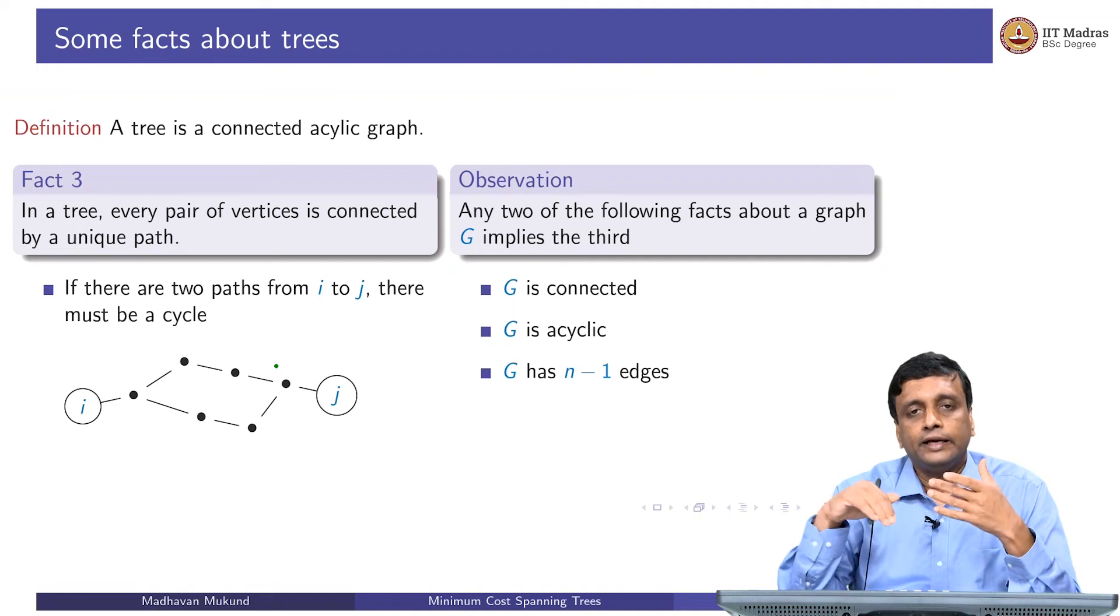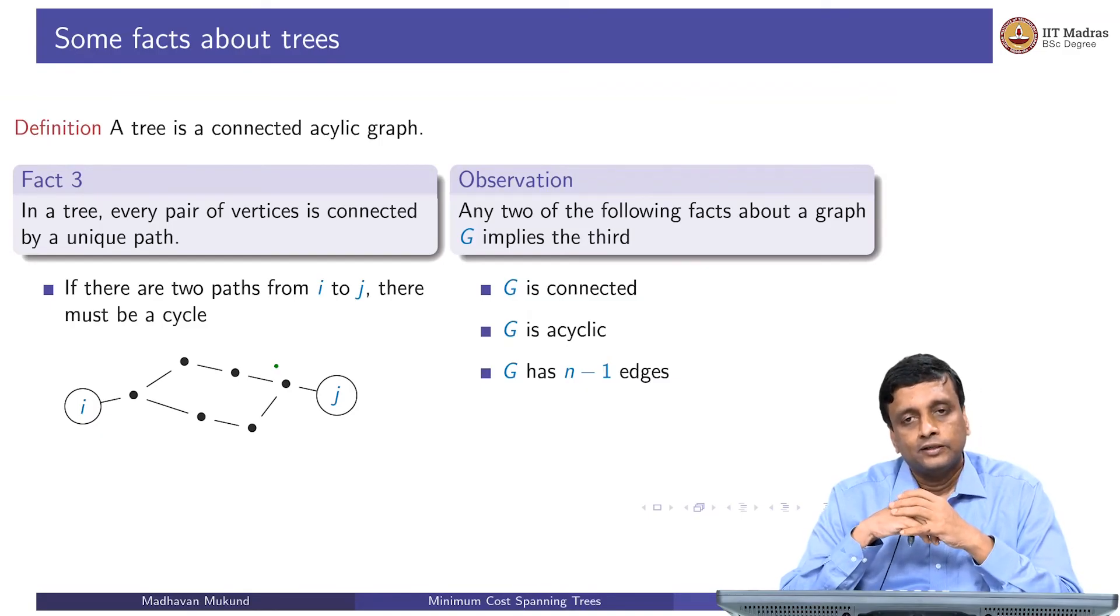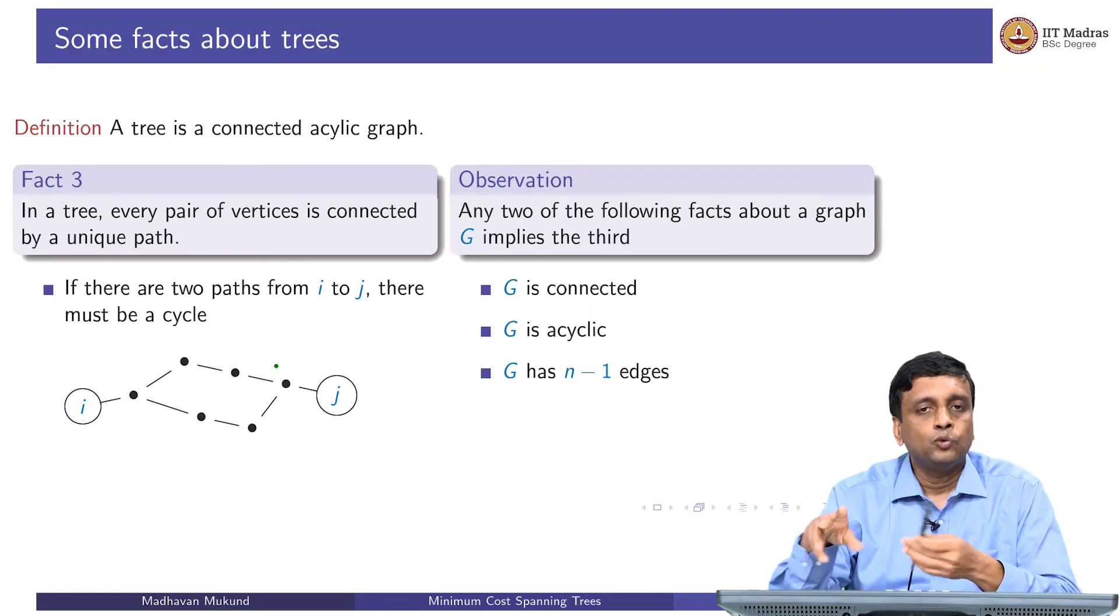Basically, any two of these tell you that something is a tree. If it is connected and acyclic, then it must be a tree. If it is connected and has n minus 1 edges, it must be a tree. If it is acyclic and it has n minus 1 edges, it must be a tree. So basically, any two of these tell you that you have a tree and imply the third.